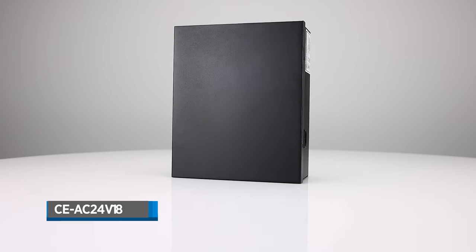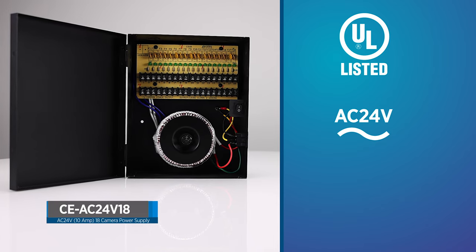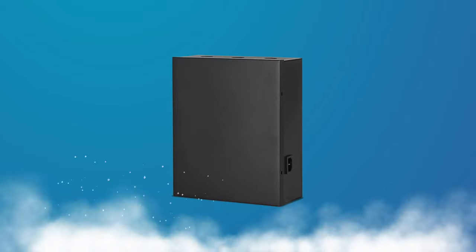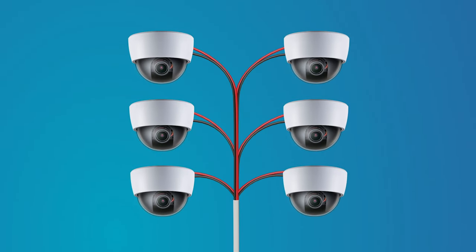The CE-AC24V18 is a UL listed AC24V 18 channel power supply for CCTV cameras. This rugged steel power supply is ideal for large AC24V camera installations.